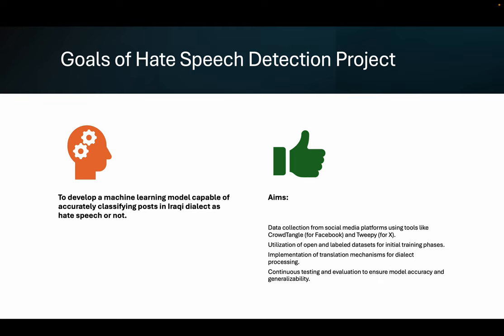The goal is to build machine learning models — specifically a large language model — which is capable of accurately classifying posts or tweets on Twitter, now called X, as either hate speech or not, and only for the Iraqi dialect. Among the many objectives is to collect data from social media platforms. We did find some open tools to do that: for Facebook, for example, it's CrowdTangle, and for Twitter or X, it's called Twippy.